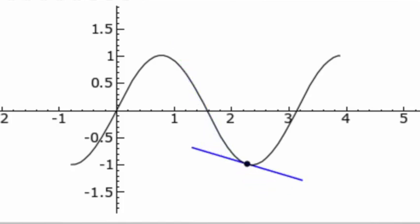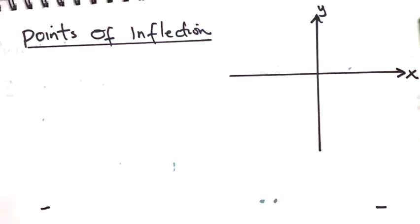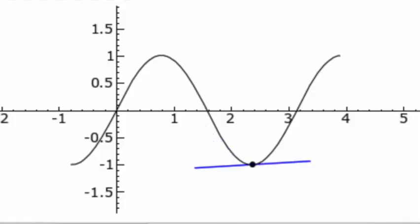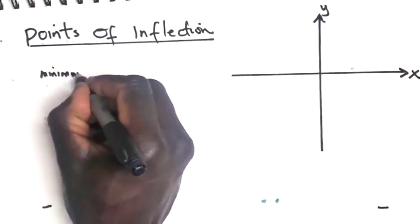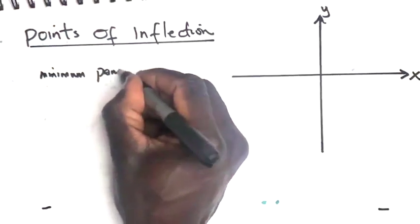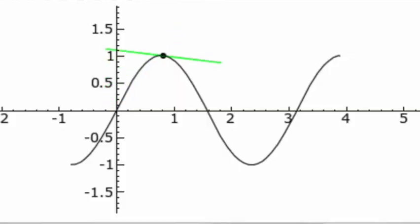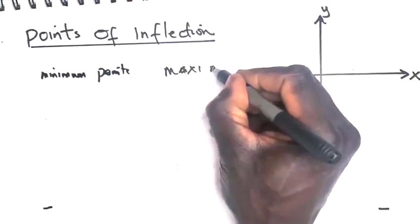The point of inflection is where the curve changes. Let's say we have a minimum point, then we have a maximum point.